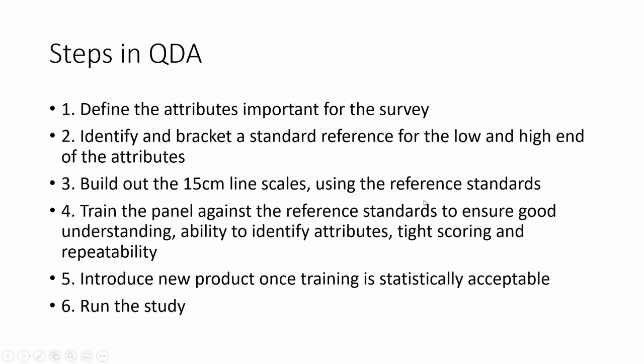You figure out where those reference standards are — if you have reference standards you'll say this one fits at the 100-millimeter mark on the line. You train the panel to ensure they can identify those attributes and are repeatable on them. When they start doing blinded samples and can repeatedly score those attributes in the right range, and once you've got good statistical relevance on your team, then you can run your study. This often takes many weeks or even months of training, and compensating people for their time makes these studies very costly.